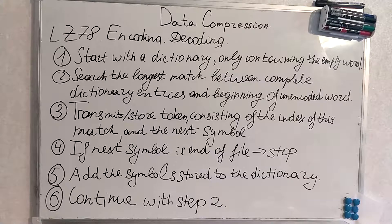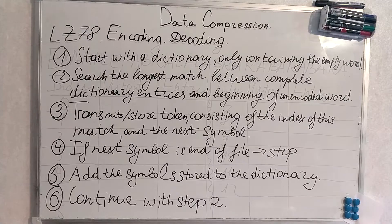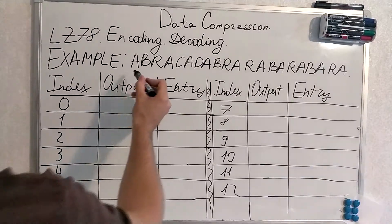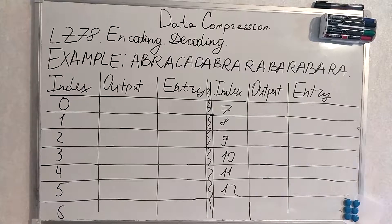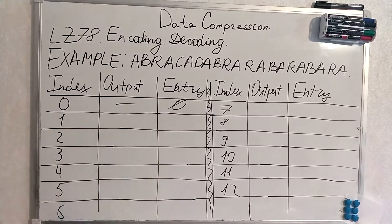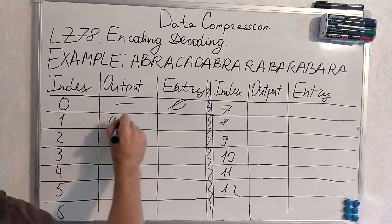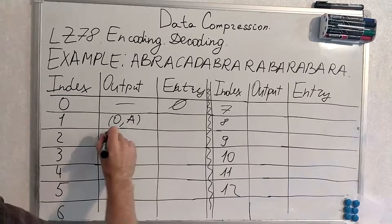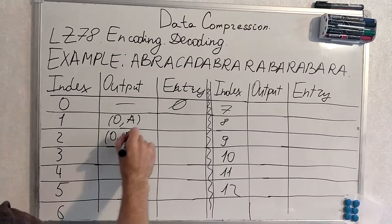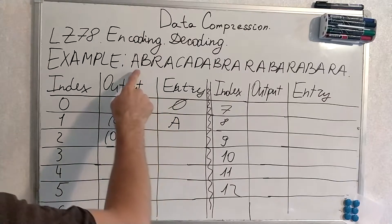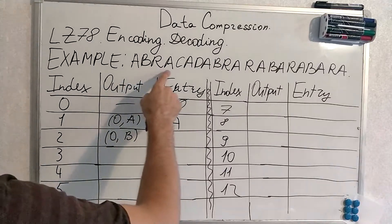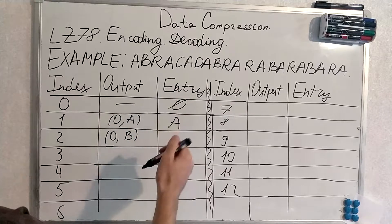I will give an example now and it will become super clear. Here we are going to encode this sequence: abracadabra rabarabara. We start with an empty symbol, then fill our table with the symbols we have in the sequence. We have a, b, r, etc.